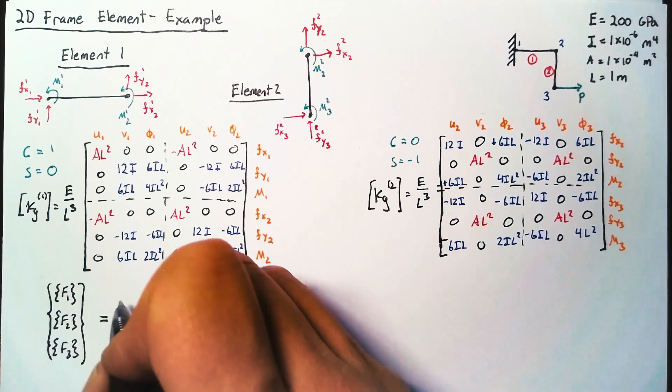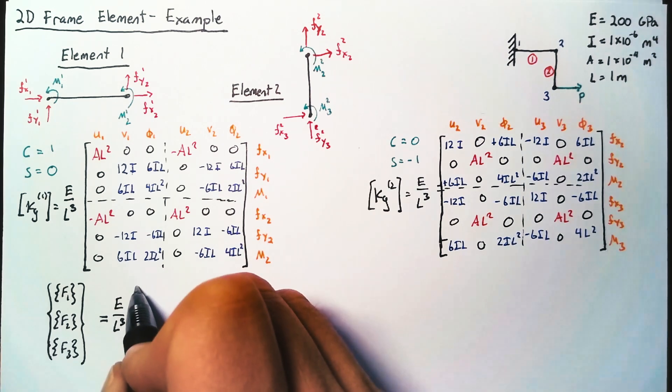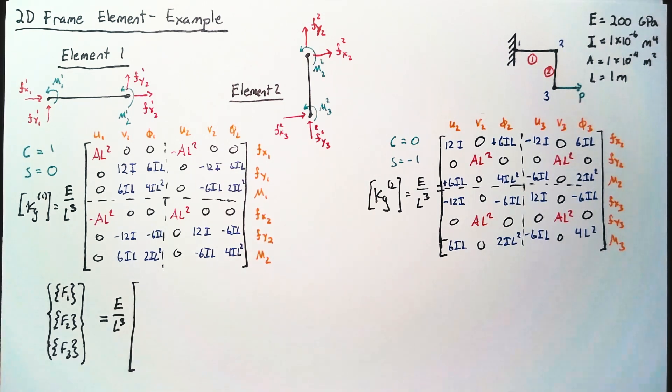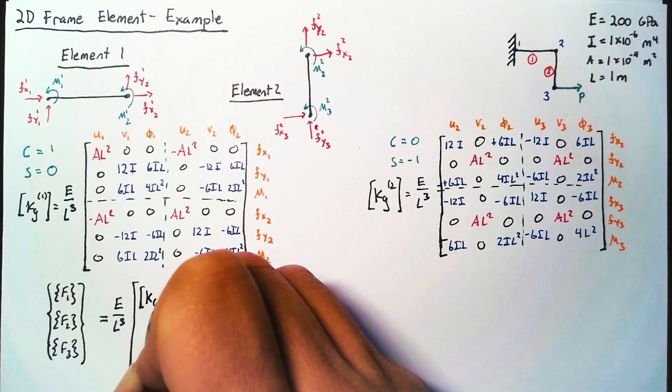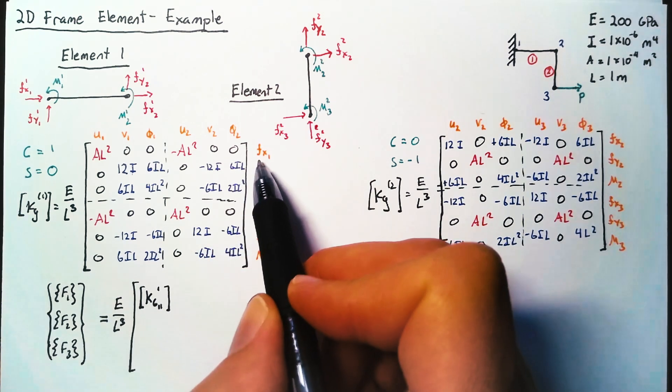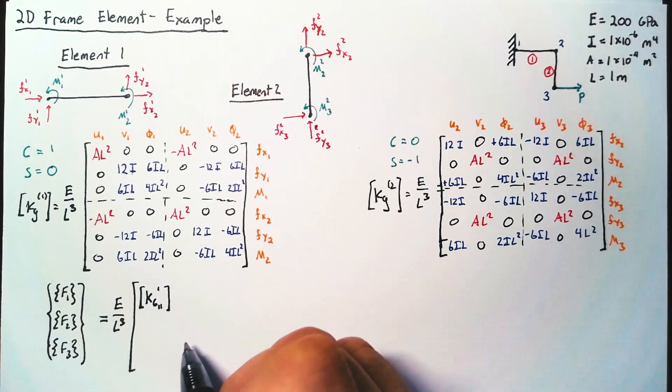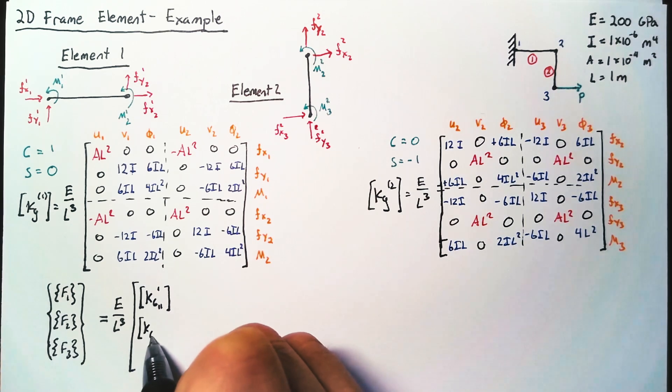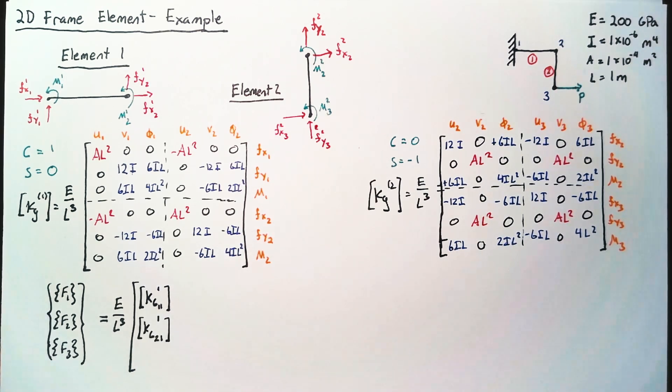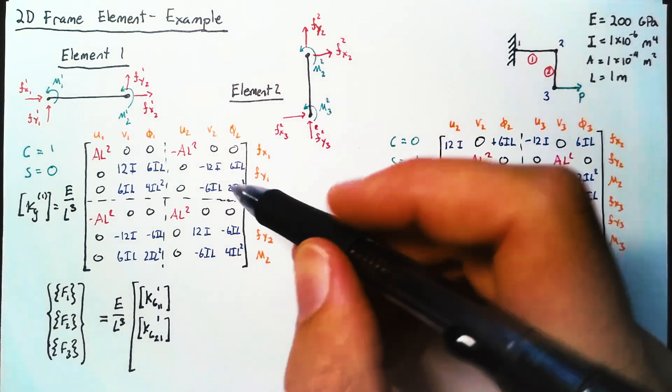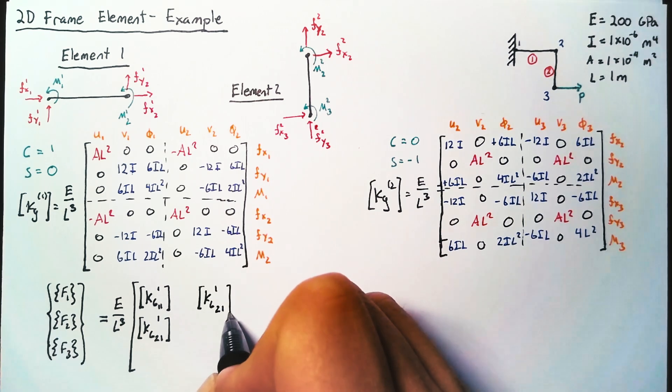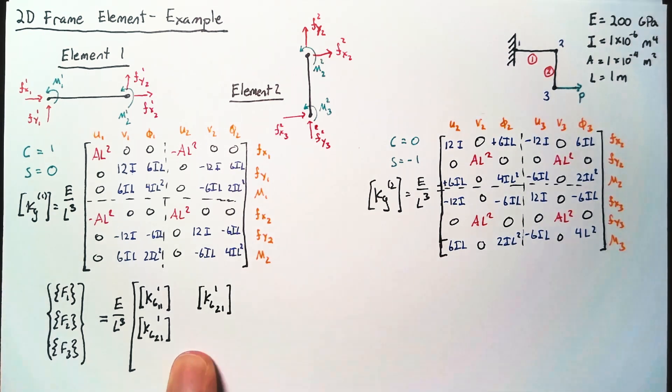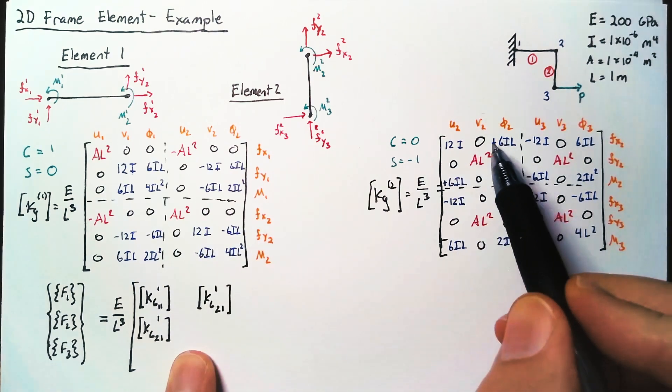And that's going to be equal to this E over L cubed that we have. And we're going to have that 9x9 matrix. But again, instead of writing out each of those values, we're going to write this as submatrices. And so this will be our KG11 from element 1. That refers to the effect of the forces of node 1 on the displacements of node 1. And then we'll have KG21 for element 1, which is the effect of the forces on node 2 on the displacements of node 1. And then we'll also have our KG12 from element 1.